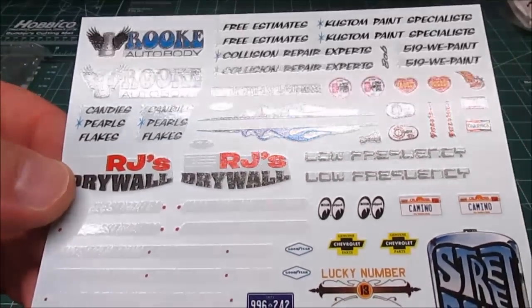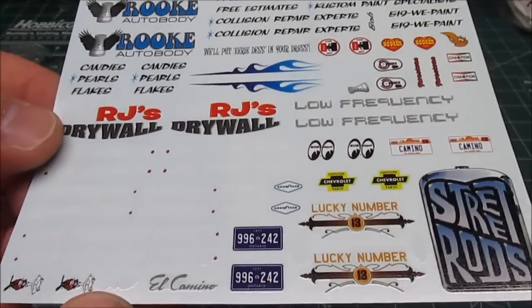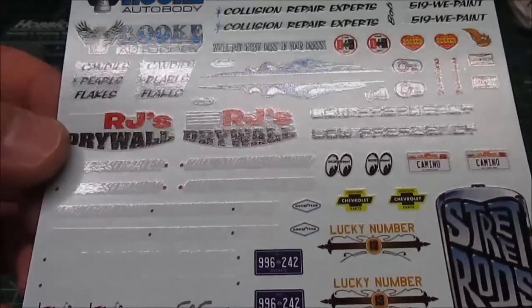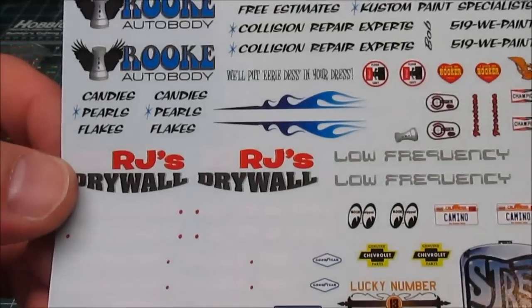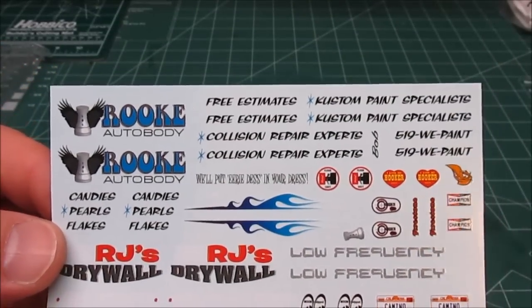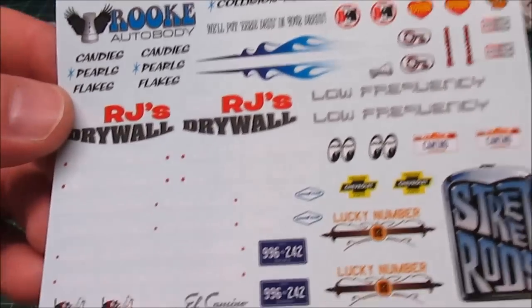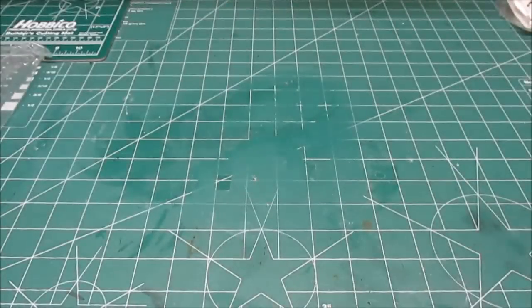We've got options for stock work truck off the lot, custom, or dragger. You can see those white decals for RJ's Drywall, Rook Auto Body, all kinds of stuff on there. And of course that Street Rod emblem and down in the corner the Cool Cats from AMT.